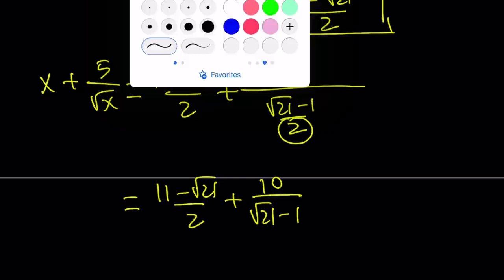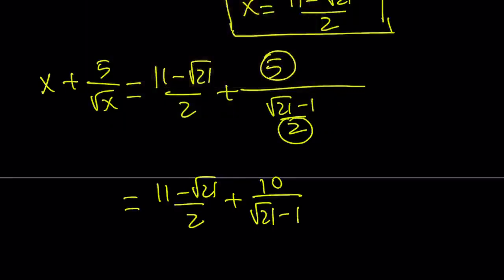At this point, I want to rationalize the denominator. I want to rationalize the denominator. Multiply by the conjugate of this expression here, which is root 21 plus 1. Multiply and divide.